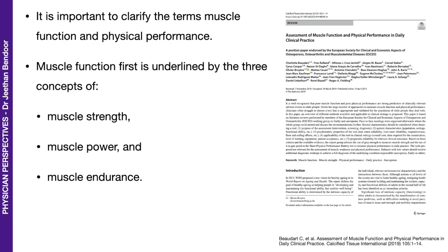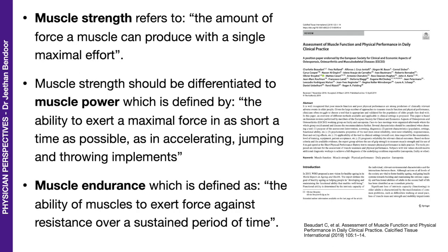It is first important to clarify the terms muscle function and physical performance. Muscle function is underlined by three concepts. Muscle strength refers to the amount of force a muscle can produce with a single maximal effort. Muscle strength has to be differentiated from muscle power, which is defined by the ability to exert a maximal force in as short a time as possible, as in accelerating, jumping, and throwing implements. Muscle endurance is defined as the ability of muscles to exert force against resistance over a sustained period of time, as in doing biceps curls repeatedly.